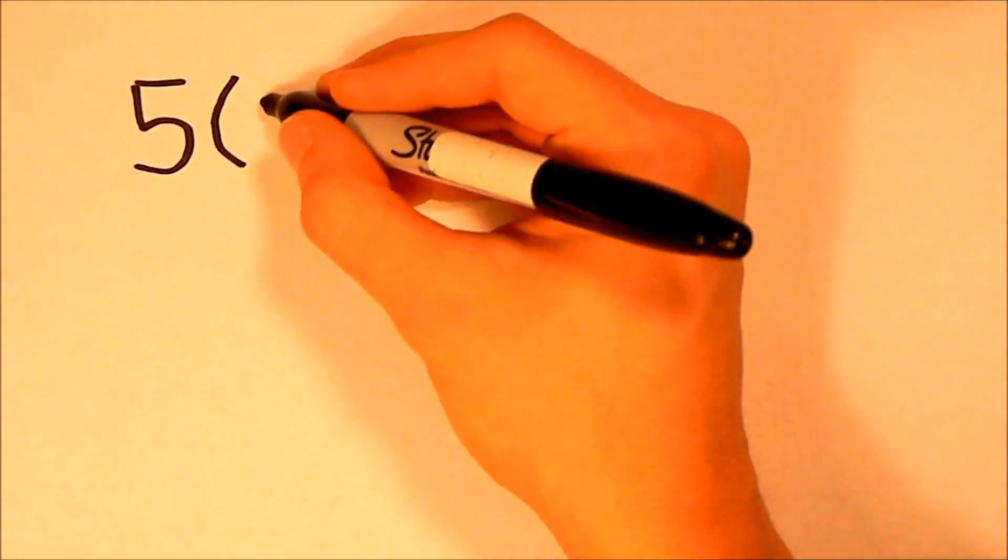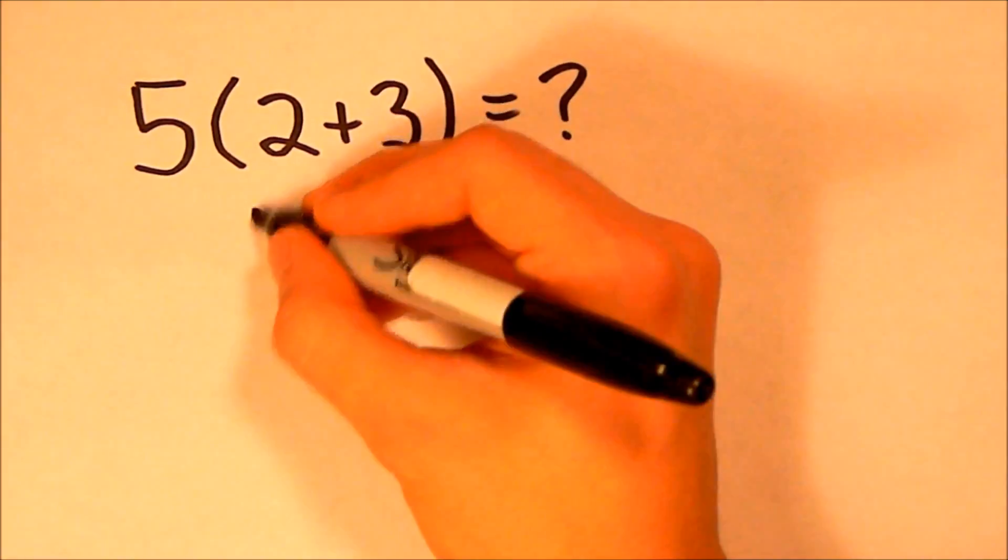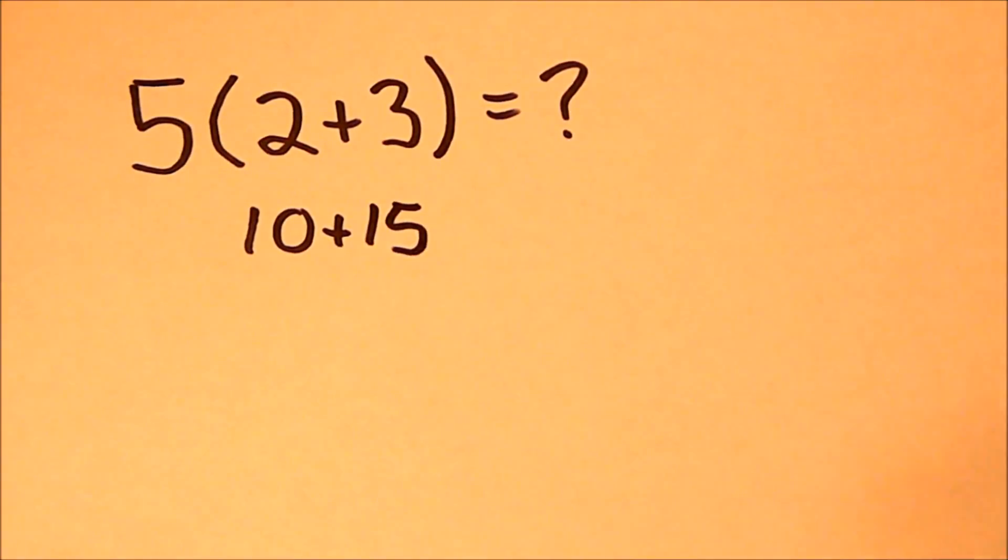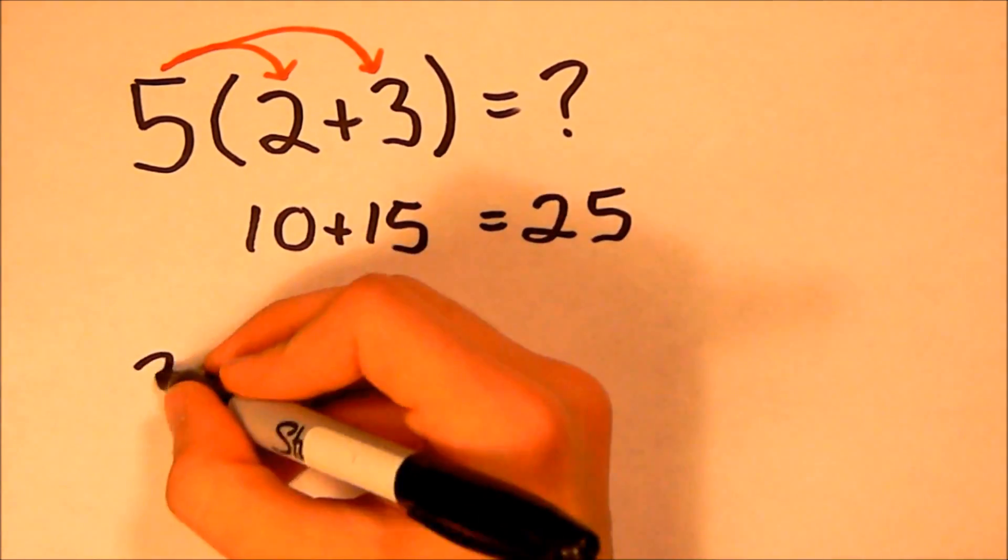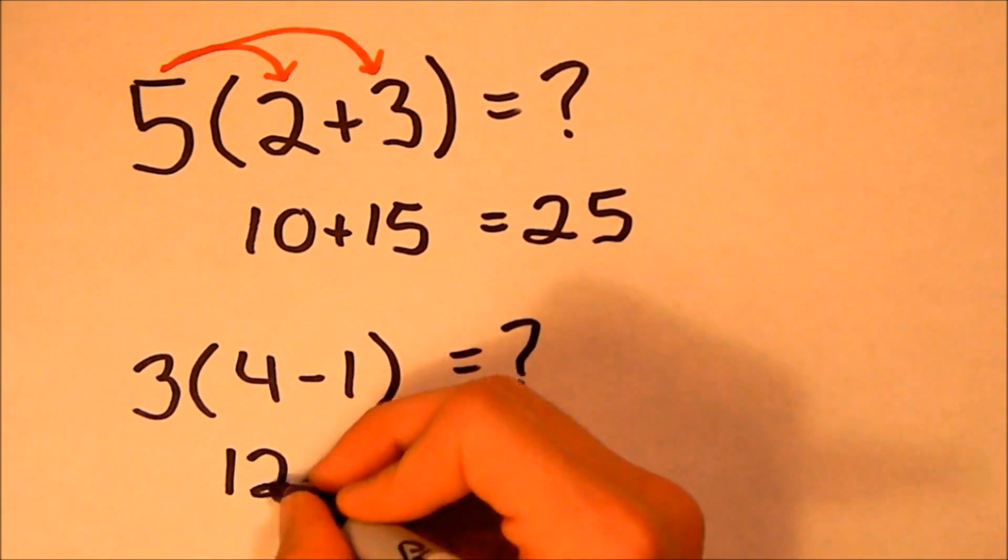So, in this example, you distribute the 5 to the 2 and the 3, then add. And, in this example, you distribute the 3 to the 4 and the 1, and then subtract.